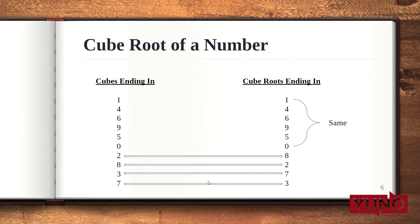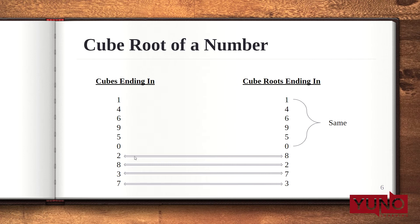Now let's understand how to find the cube root of a number. Here again, this table is very helpful. The cubes ending in 1, 4, 6, 9, 5, or 0 will have cube roots ending with the same digits respectively. If the cube is ending with 2, the cube root will end in 8. If the cube is ending with 8, the cube root will end in 2. If the cube is ending with 3, the cube root will end in 7. And if the cube is ending with 7, the cube root will end in 3.